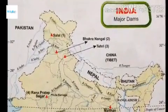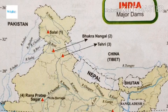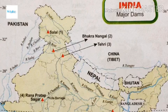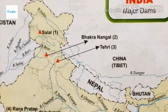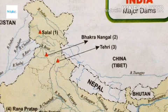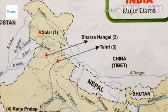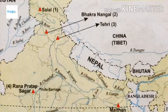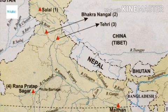The next very important map is of major dams. A dam is a place where river water is blocked and used for irrigation, electricity production, etc. These are also called multi-purpose projects. We have to go through eight important dams of India. Starting from the northeast: first is Salal Dam, which is on the Chenab River in Jammu and Kashmir Union Territory. Second is Bhakra Nangal, in Himachal Pradesh, on the Sutlej River. Third is Tehri Dam, one of the most famous dams, in Uttarakhand on the Bhagirathi River.